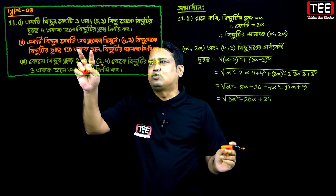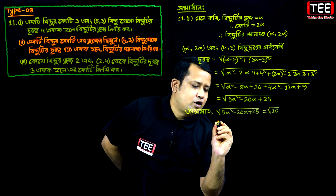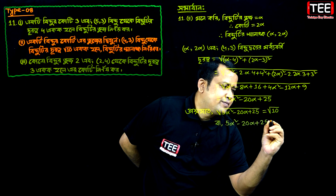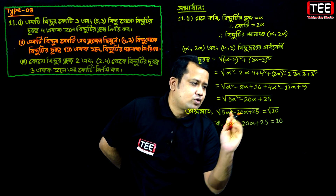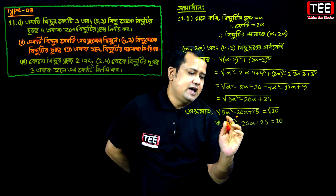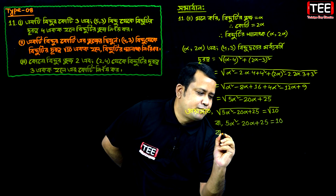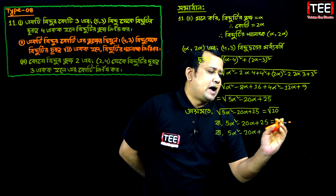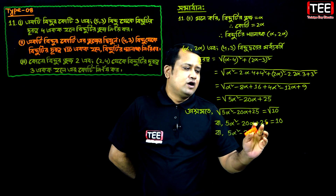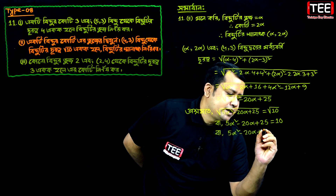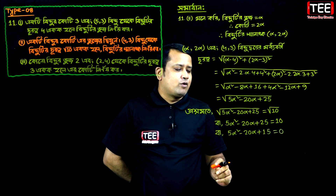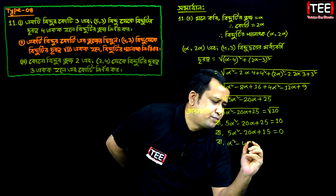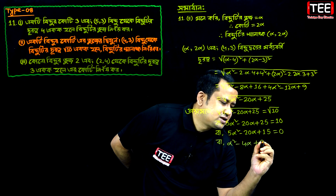So we have 8 is equal to root 10. So we have to add root r square plus 5 alpha square minus 20 alpha plus 25 is equal to 10. So we have root r square plus root r square. So pi 8 is equal to 10. So we have root r square minus 5 alpha square minus 20 alpha plus 25 is equal to 0.